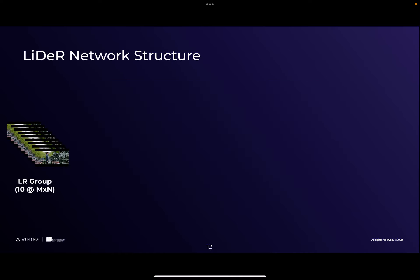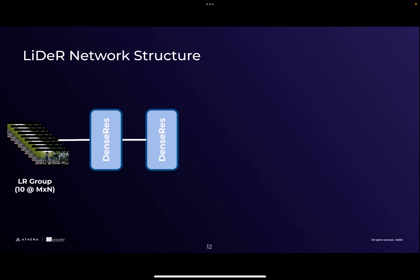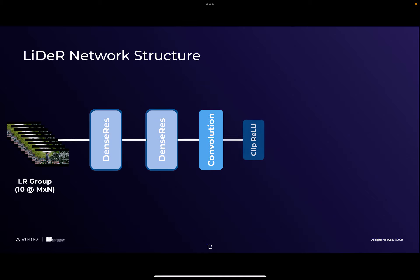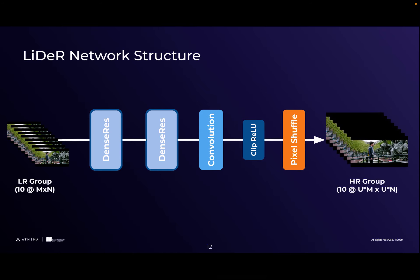Now let's examine the overall network structure. The LiDAR network takes a group of low-resolution frames as input — the resolution can be arbitrary. In our experiments, we chose 10 frames per group. We pass these 10 frames through two Dense-Res Blocks sequentially. After the outputs from the Dense-Res Blocks, we pass through a convolution layer to prepare the input for the pixel-shuffle layer. Before the pixel-shuffle layer, which is responsible for the final upscaling, we apply a clipped ReLU function that limits output values between 0 and 1. This is a crucial step for quantization, which is essential for running mobile-based DNNs. Finally, we apply the pixel-shuffle layer and obtain a high-resolution output upscaled by the upscaling factor U.